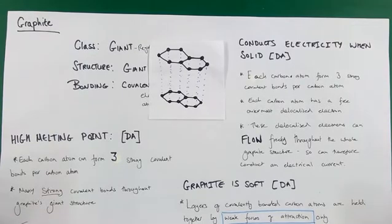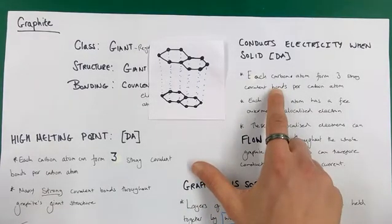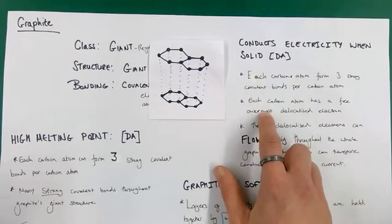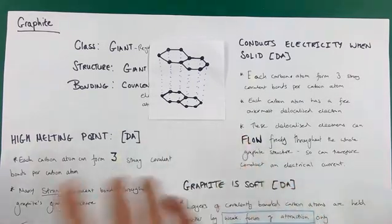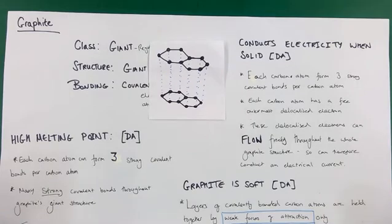Returning to the previous point, each carbon atom forms three strong covalent bonds. Therefore, every carbon atom inside the graphite structure has one free outermost delocalized electron. That word delocalized means it has the capacity to move or flow freely throughout the entire graphite structure, all the way through this giant covalent structure. Therefore, it's able to conduct an electrical current. Graphite conducts electricity as a solid because it has free delocalized electrons, one per carbon atom, and there are many millions of carbon atoms inside the structure. This means these delocalized electrons are free to flow or move and conduct an electrical current.